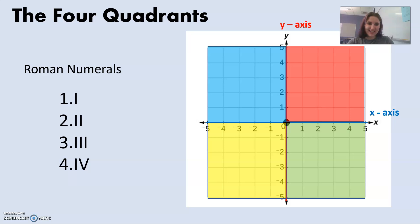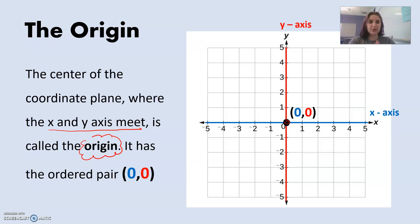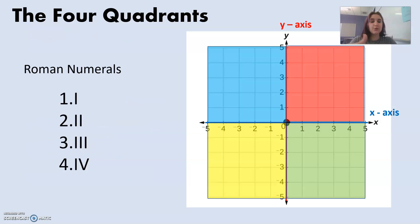The coordinate plane is made up of four quadrants. So when we had this picture over here, you can see the x and y-axis kind of make four boxes. And those four boxes or four parts of the coordinate plane are called the quadrants. So here's the four of them here.